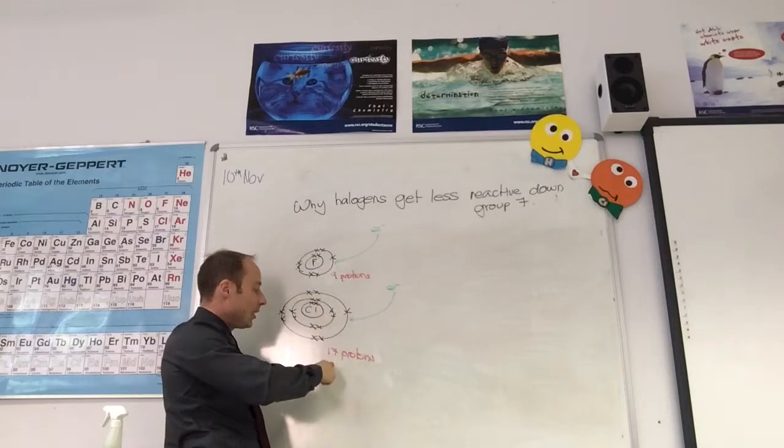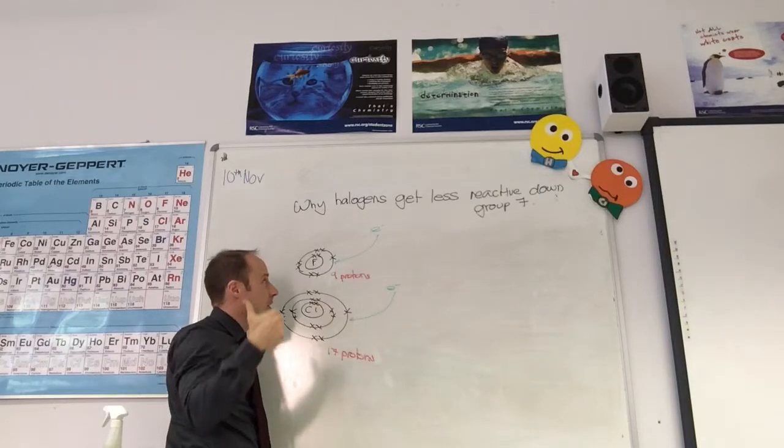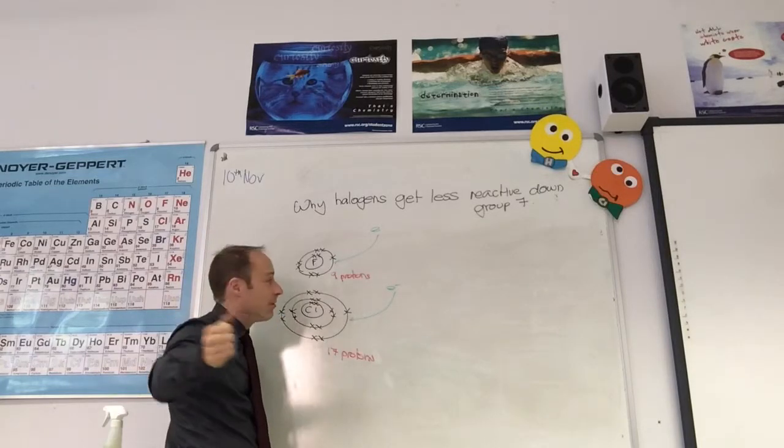Yeah. So although the nuclear charge for chlorine is higher, there are more shells. What other things do we need to consider? We need to consider protons, shells, atomic radius. Brilliant.